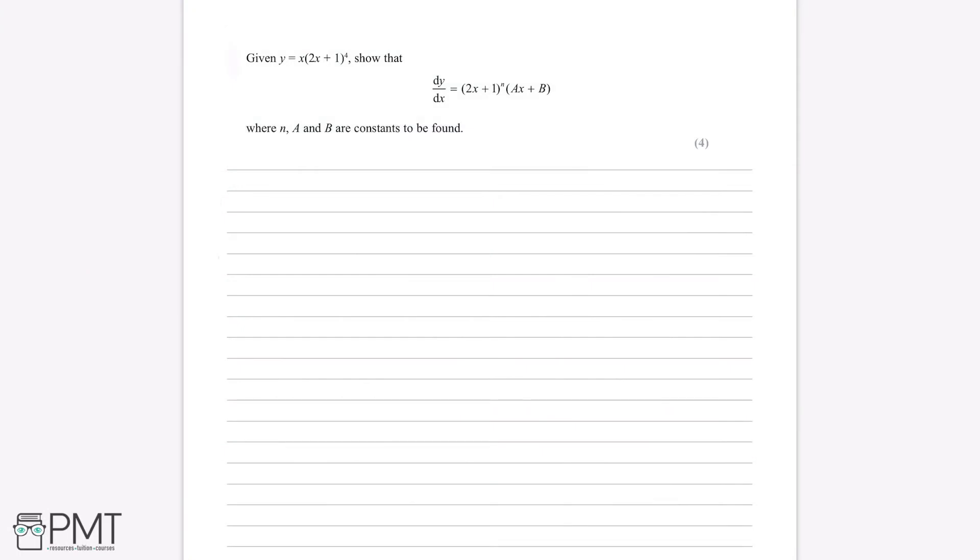Given that y is equal to x multiplied by 2x plus 1 to the power of 4, show that dy by dx is equal to 2x plus 1 to the power of n multiplied by ax plus b, where n, a and b are constants to be found.